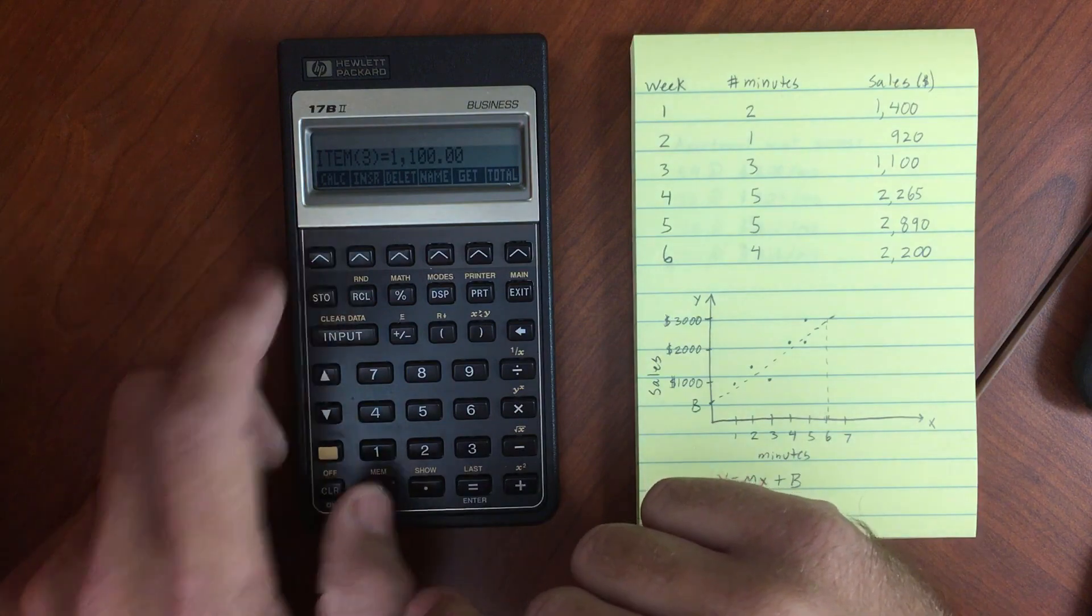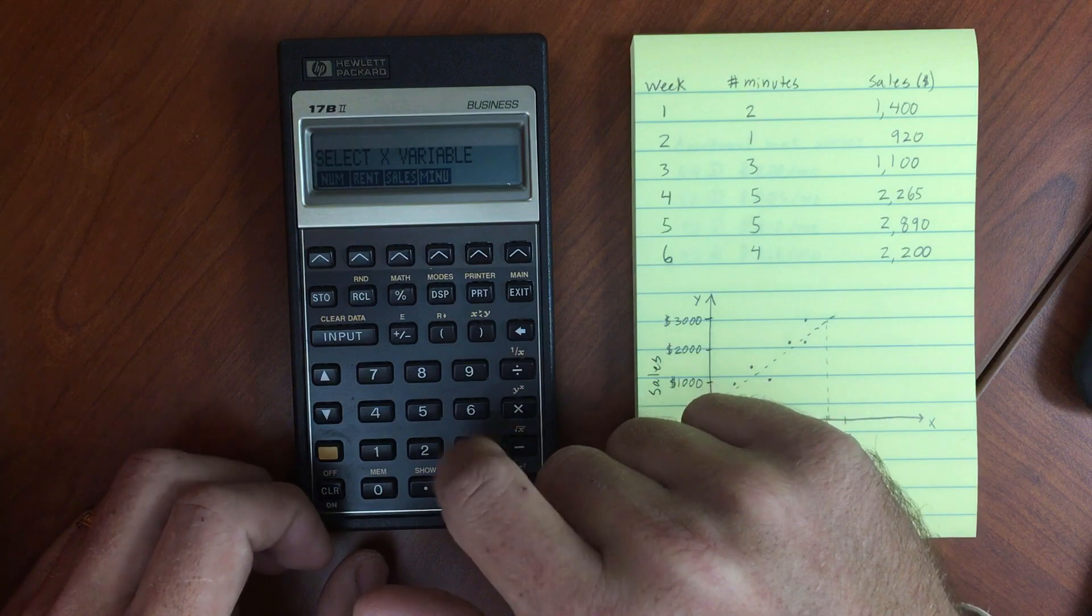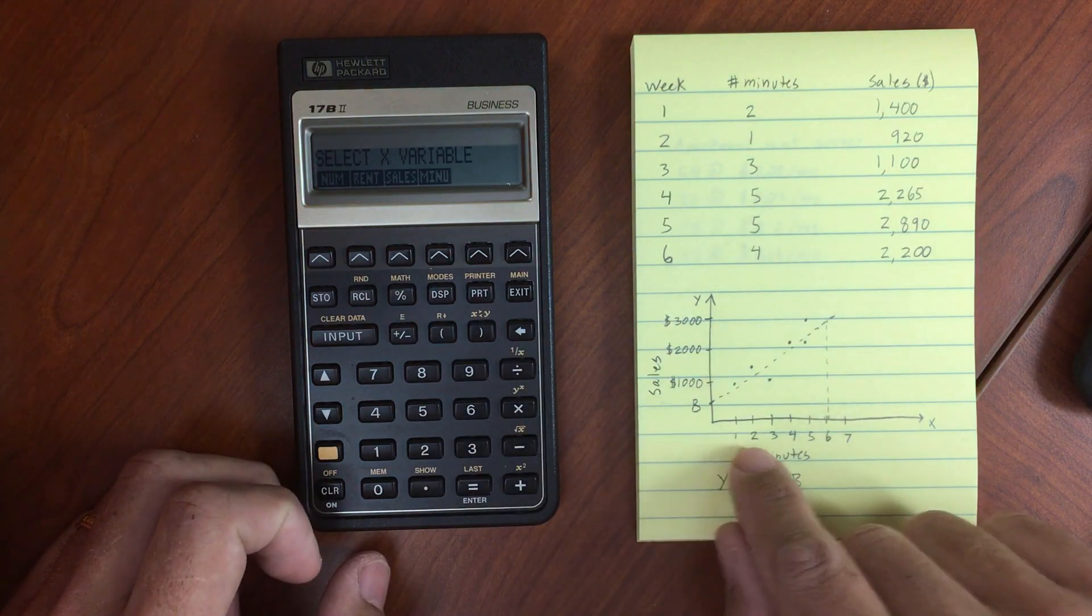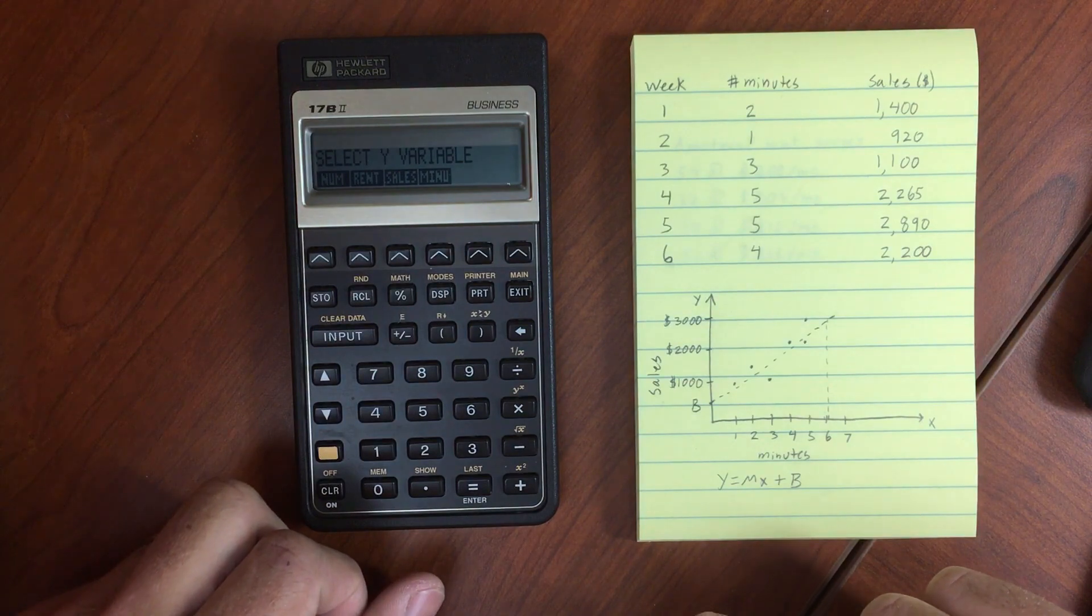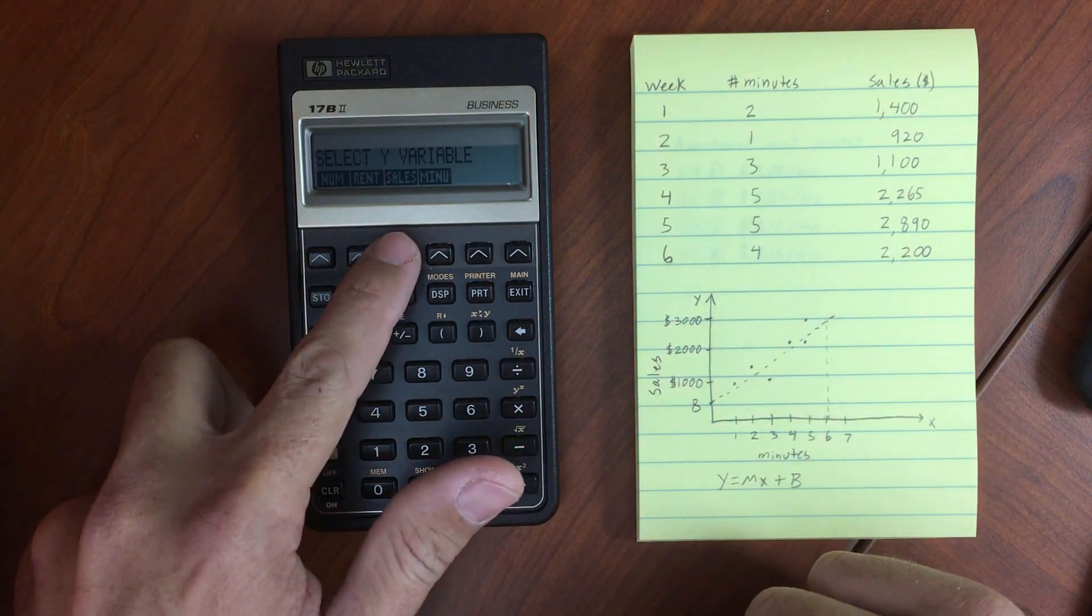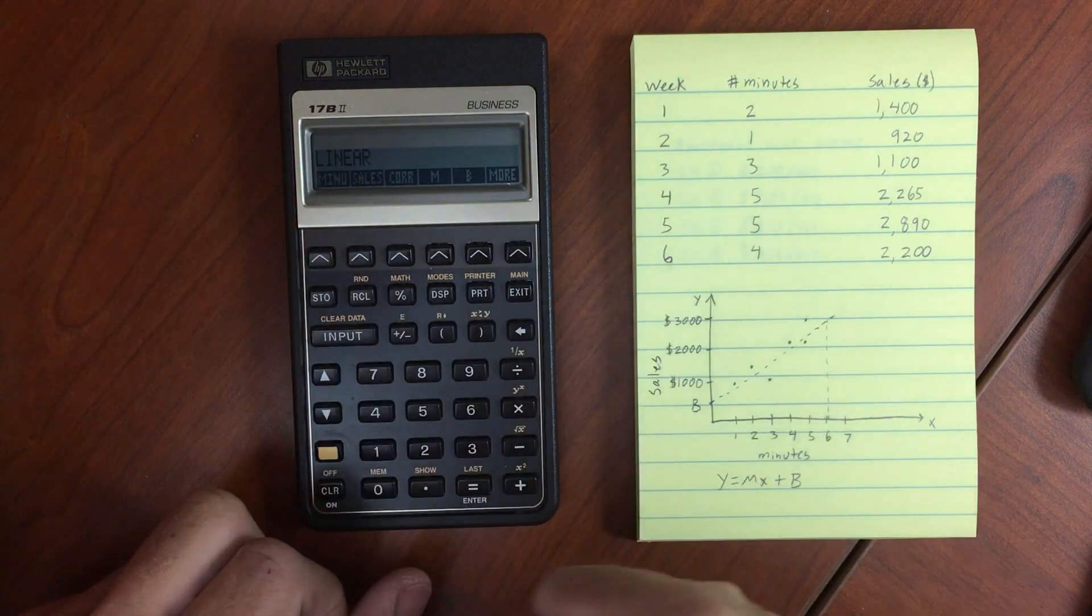Okay, so now let's do a calculation. We're going to go to More, and then Forecast. So select our x variable. That's going to be our x-axis, which is minutes. So we'll select the minutes list. Y variable is sales. So we select the sales list. And it's showing us we have a linear fit currently.